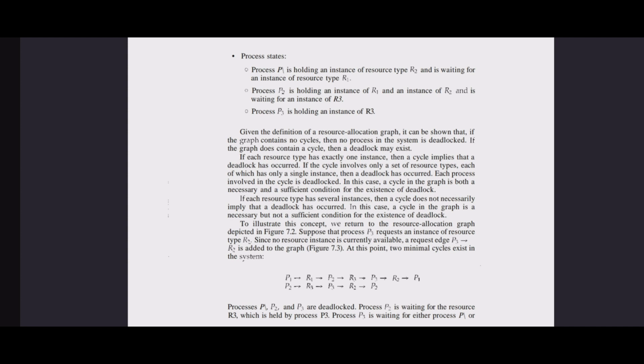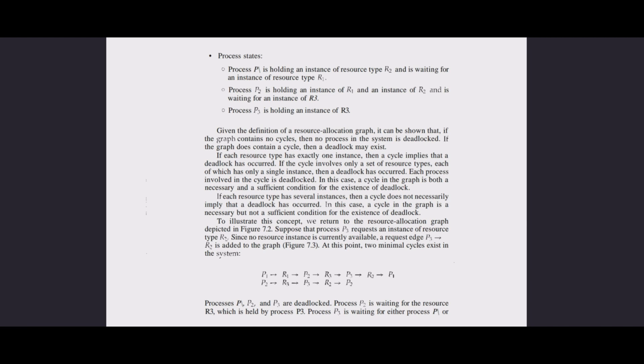Given the definition of the resource allocation graph, it can be shown that if the graph contains no cycles, then no process in the system is deadlocked. If the graph does contain a cycle, then a deadlock may exist. If each resource type has exactly one instance, then a cycle implies that a deadlock has occurred. If the cycle involves only resource types each with a single instance, then a deadlock has occurred and each process in the cycle is deadlocked. In this case, a cycle is both a necessary and sufficient condition for deadlock.